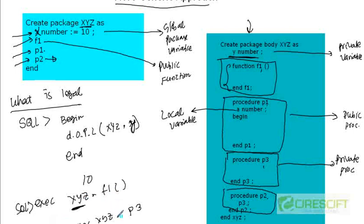These are the visibility rules, and they are very intuitive. Whatever is mentioned in the package specification is public — global variables, public functions, and public procedures. Whatever is defined only inside the package body is private, and those things are only accessible within the package body.